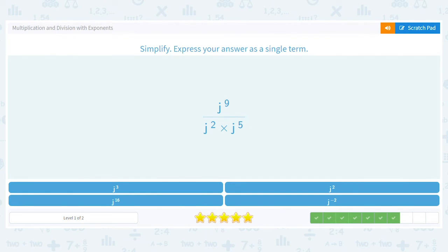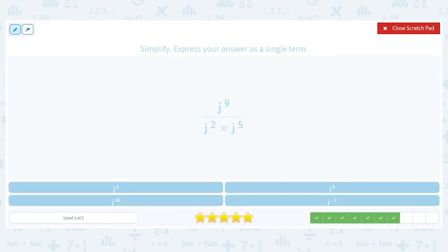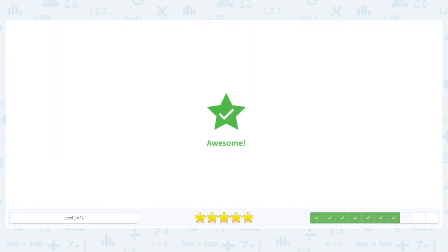How about this? Well, we've got nine minus two minus two minus five, which will give us nine minus seven or two. So this should be j squared. Awesome.